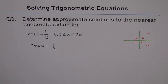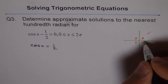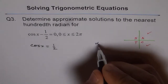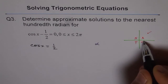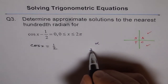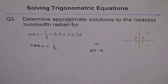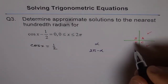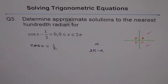One solution is the related acute angle alpha, so one answer is angle alpha. The other answer is 2 pi minus alpha. Since the cos value of half could be in quadrant 1 or in quadrant 4, these are the two solutions we are looking for.